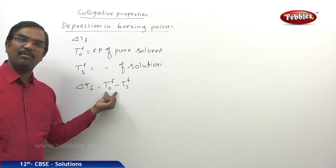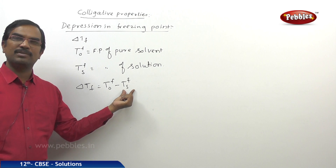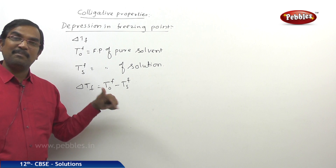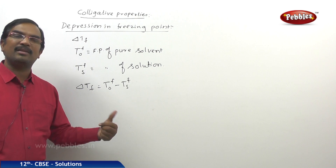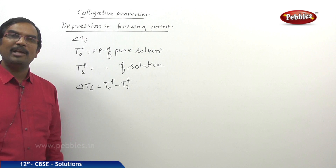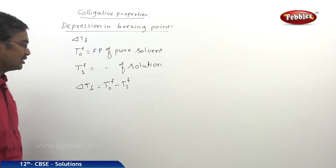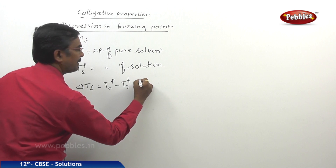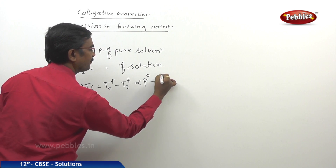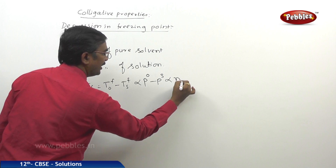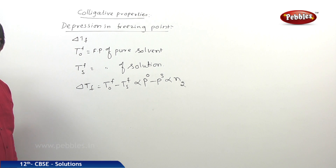There is a depression or decrease in the freezing point — the freezing point of the pure solvent is higher than that of the solution. This delta Tf is also proportional to P-naught minus PS, and proportional to the number of moles of the solute.